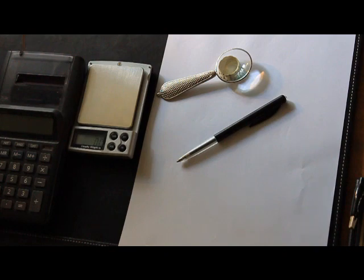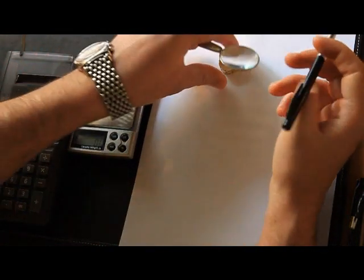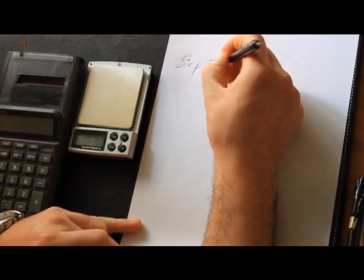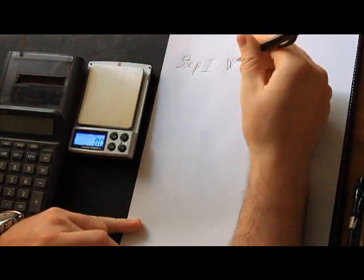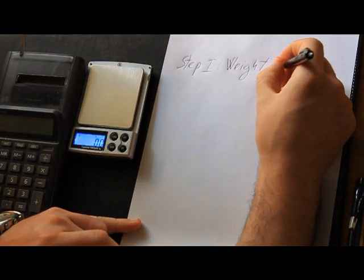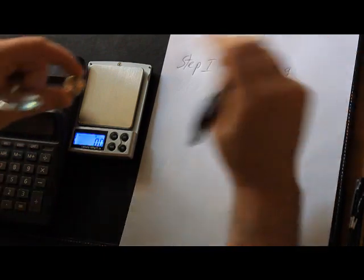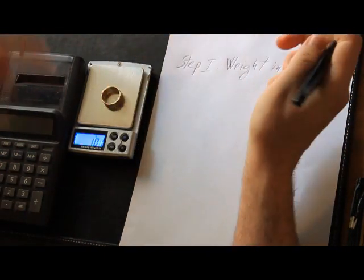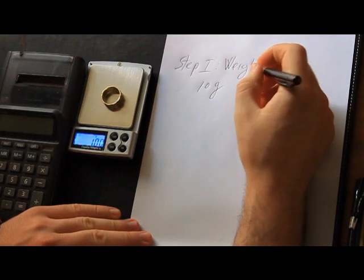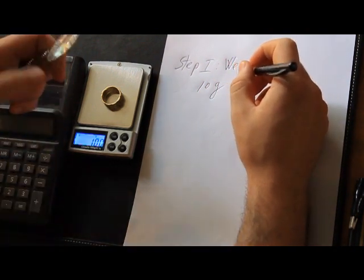I shall quickly demonstrate on this wedding band. Step one, weighing in grams preferably because it's easier for the mathematics. So this one has 10 grams. Look at that, how lucky I am. So 10 grams of gold.